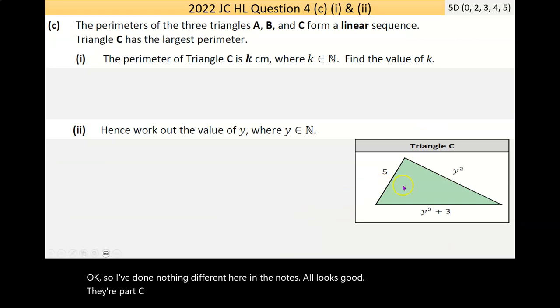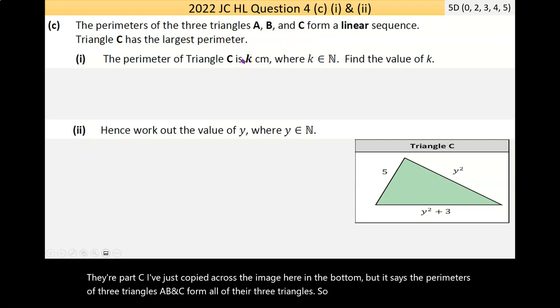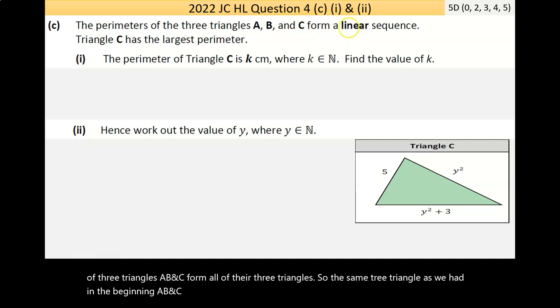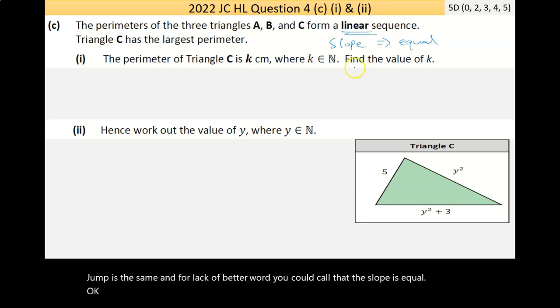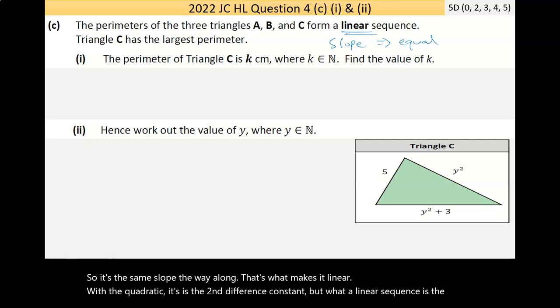Now part C. It says the perimeters of the three triangles A, B, and C form a linear sequence. Now, the question is, what does this mean? A linear model or sequence, the change between each jump is the same. And for lack of a better word, you could call that the slope is equal. So it's the same slope the whole way along. With a quadratic, it's the second difference constant. But with a linear sequence, it's the slope constant.